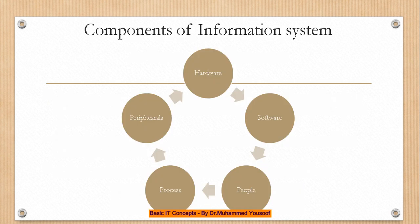An information system has many parts — its components are: hardware, software, people, process, and peripherals. Process means the set of rules, business rules, and set of operations that happen in an organization. All these together are called the components of the information system. A system is a set of components, and the information system has these five components embedded in it.